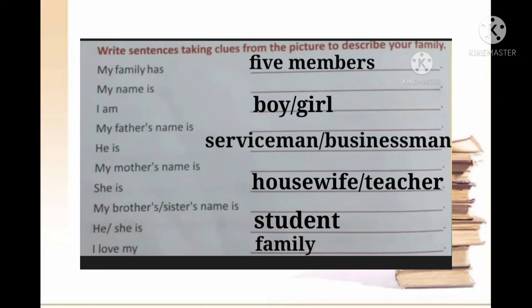Write your father's name. 'He is blank' — you can write serviceman, businessman, teacher, etc. Then write your mother's name. 'She is blank' — a housewife, teacher, or doctor, etc., accordingly. Then: 'My brother's or sister's name is blank' — write your brother's or sister's name. 'He or she is a student.' And the last sentence is 'I love my family' — that is the conclusion.